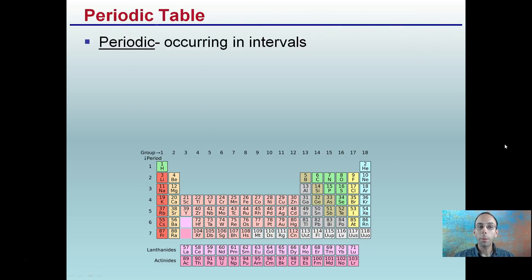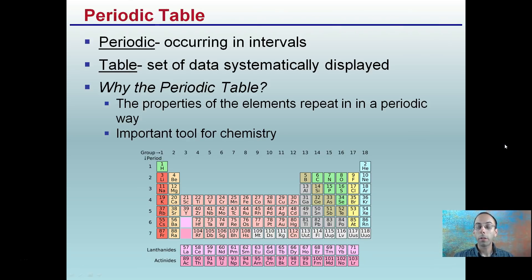So periodic table — let's break this word down initially. Periodic means occurring in intervals, and a table is simply a set of data systematically displayed. So why spend time on the periodic table? Well, properties of the elements repeat in a periodic way, and this is a very important tool for chemistry.